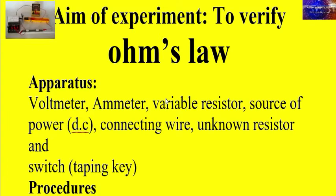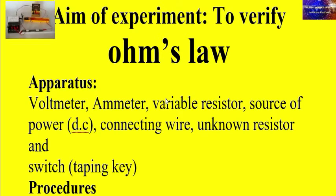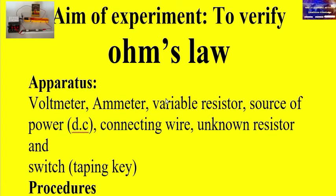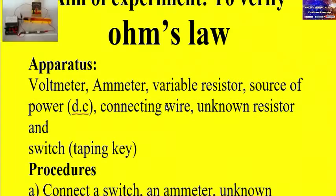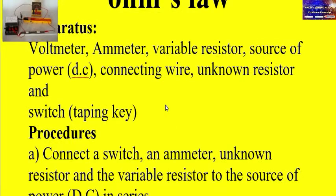The apparatus provided are: a voltmeter, an ammeter, a variable resistor (rheostat), a source of power or DC supply, connecting wires, an unknown resistor, and a switch. Those are the apparatus you can use to verify Ohm's Law.